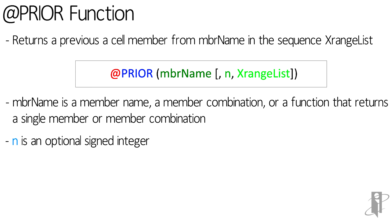n is an optional signed integer that tells the Prior function which previous cell to return. Negative numbers have the same effect as the Next function. 1 is the default value if n is not specified, which returns the prior member from the lowest level of the dimension marked as time in the database outline.